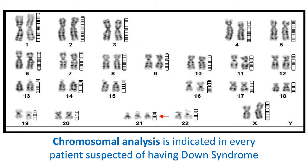As you can see in this karyotype report, all chromosomes are in pairs except chromosome 21, where there are three — that is trisomy 21, the abnormality present in 95% of cases of Down syndrome. Chromosome analysis is indicated in every patient suspected of having Down syndrome.